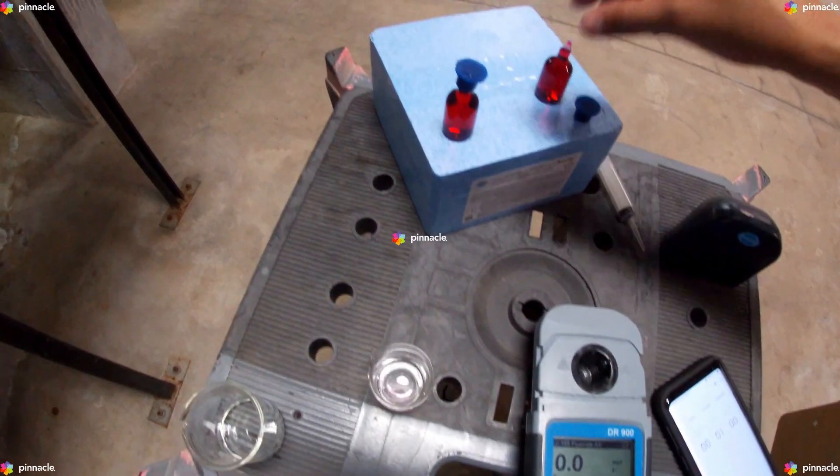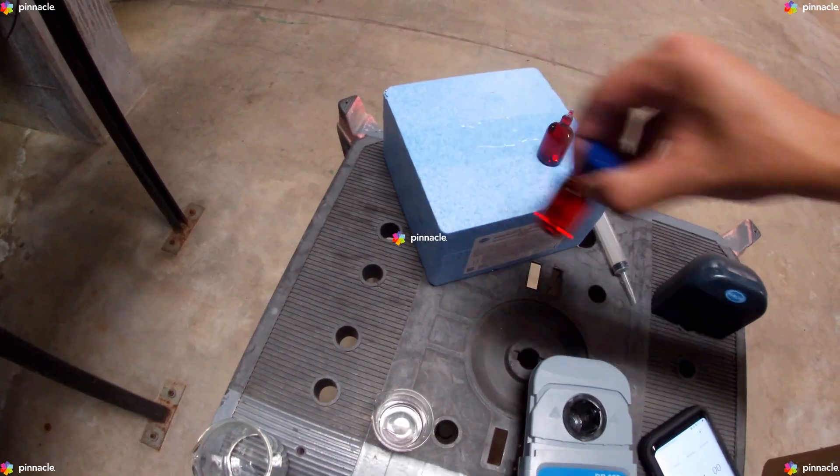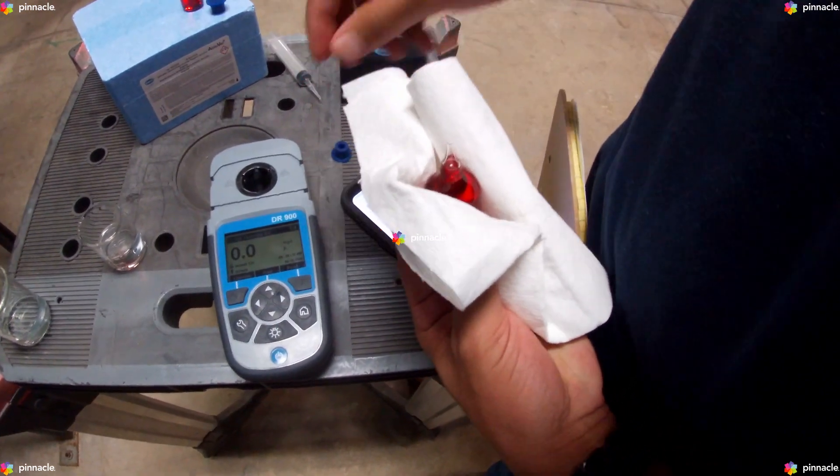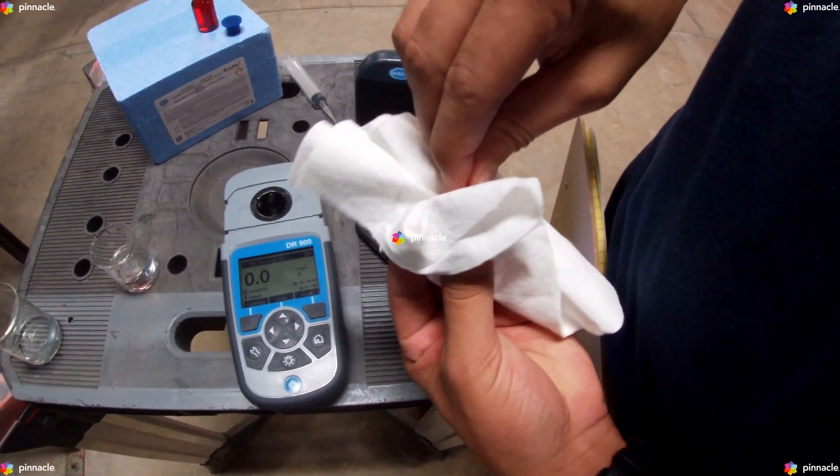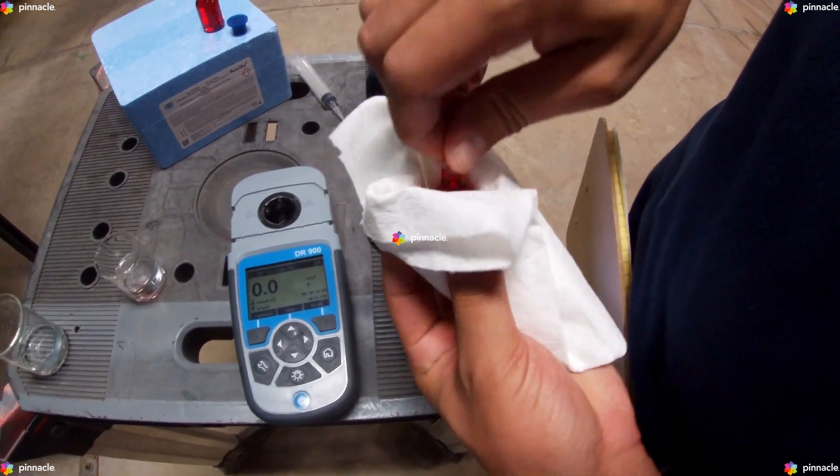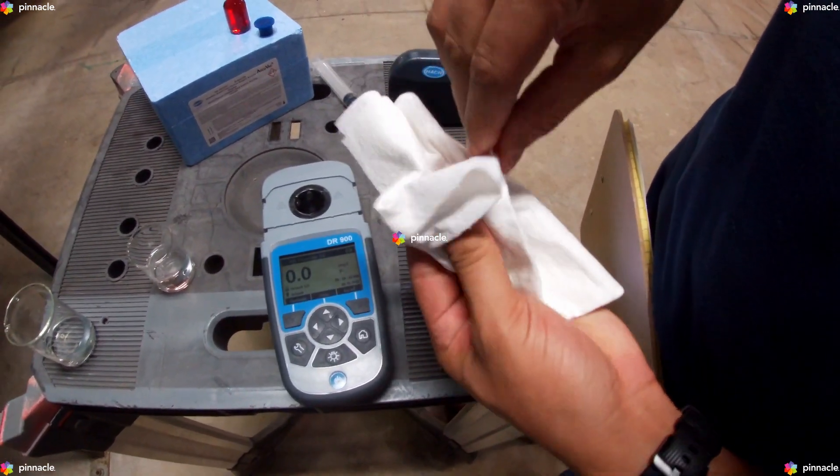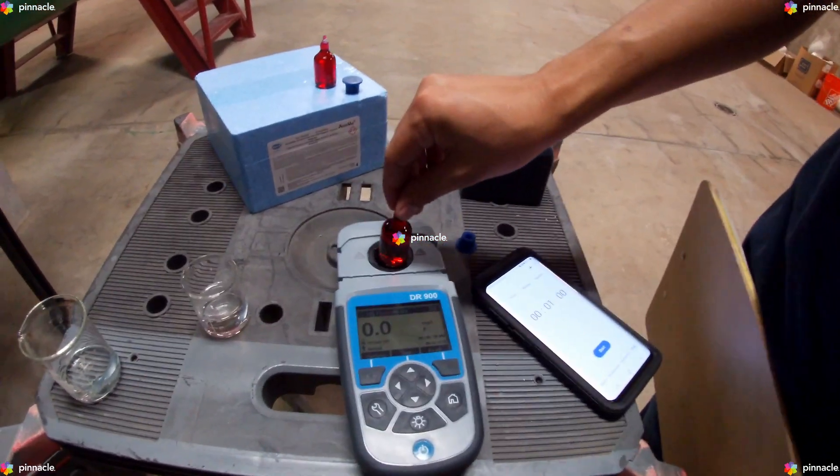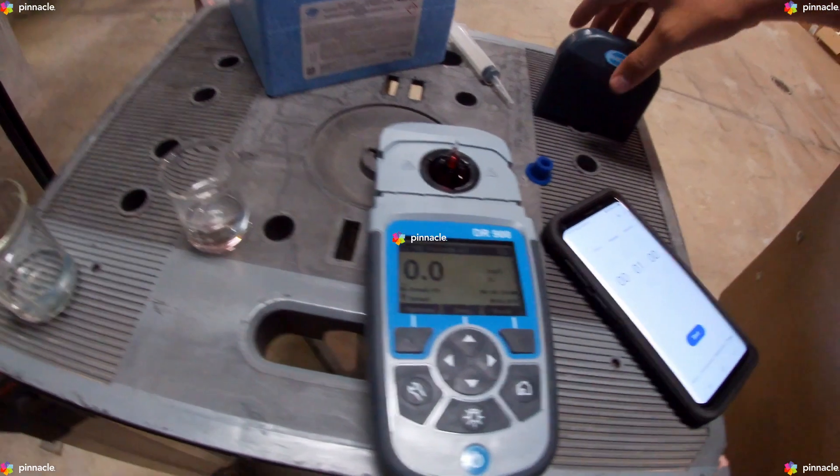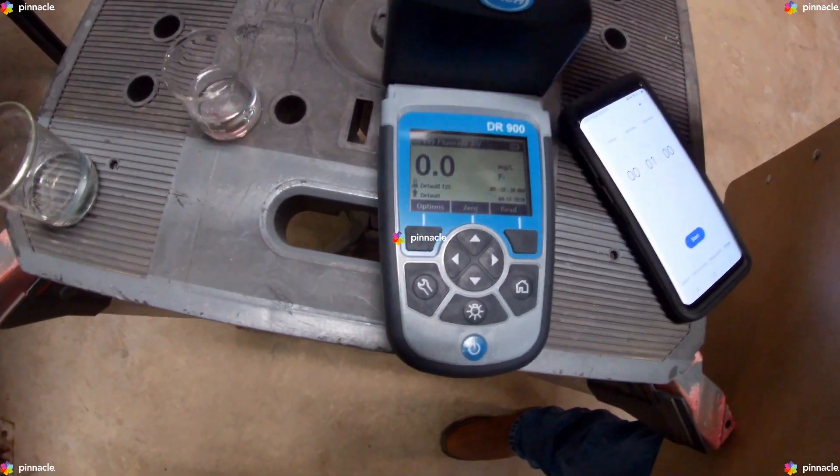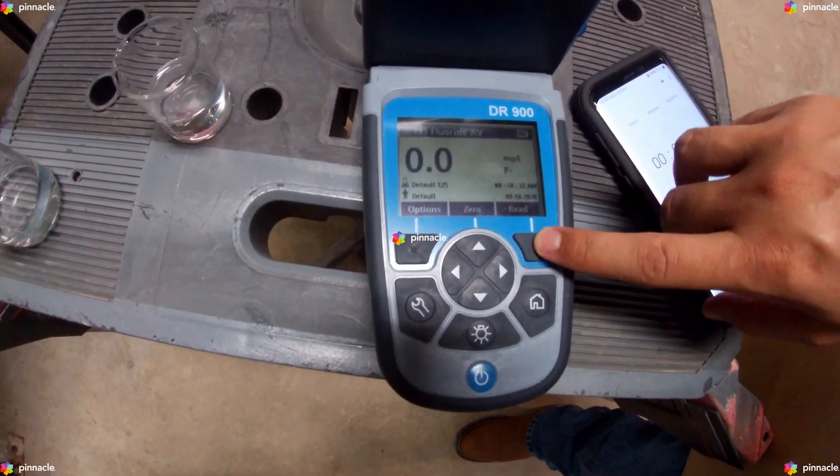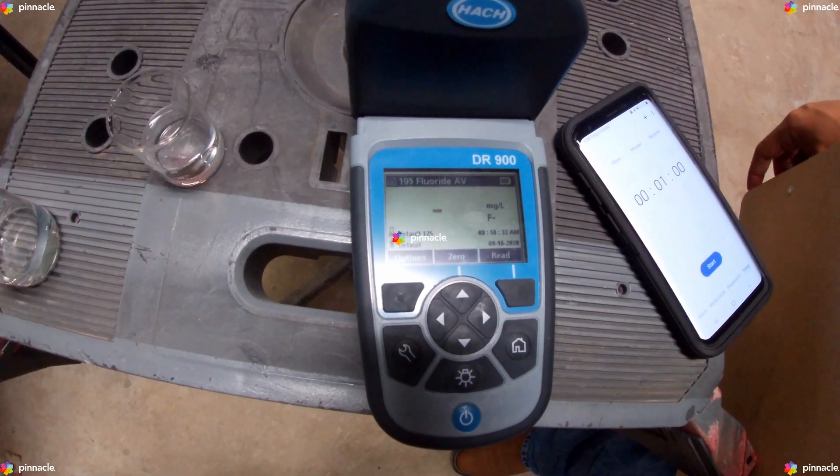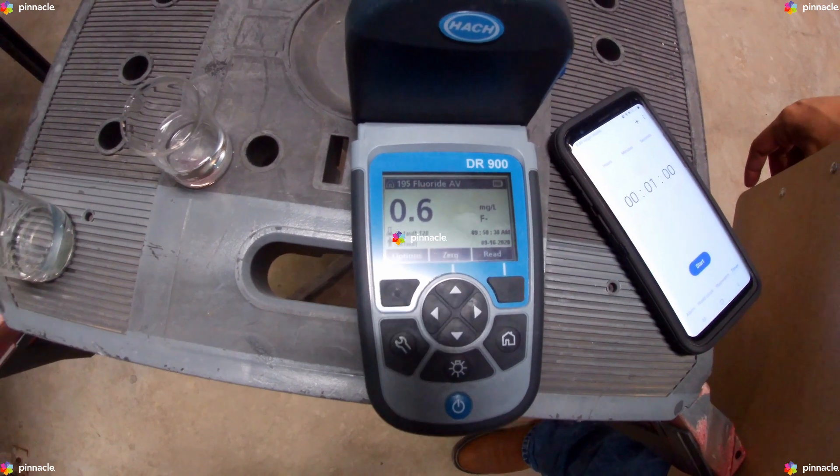We will then grab our sample AccuVac Ampoule and thoroughly clean it. We will then insert the prepared sample AccuVac Ampoule into the cell holder of our DR900 pocket colorimeter and press read. The results are shown in mg per liter of fluoride.